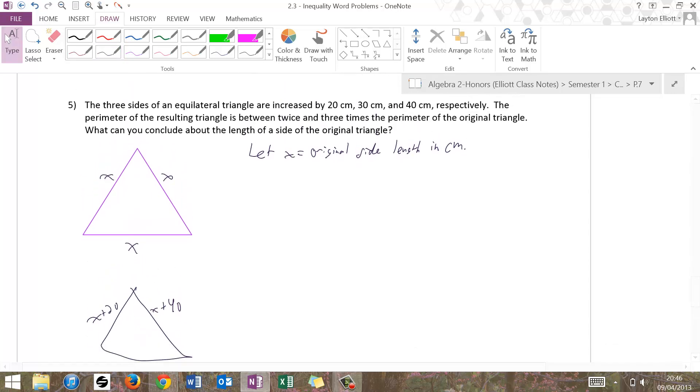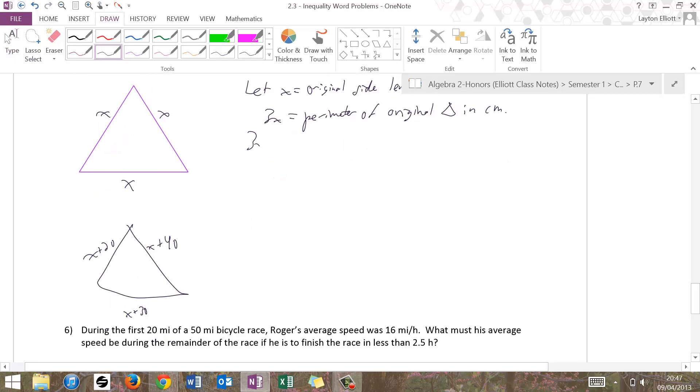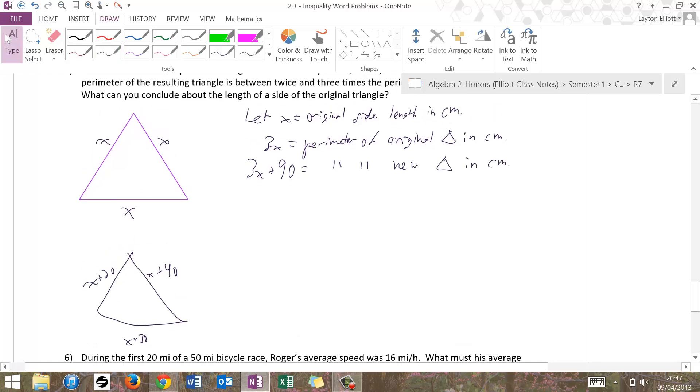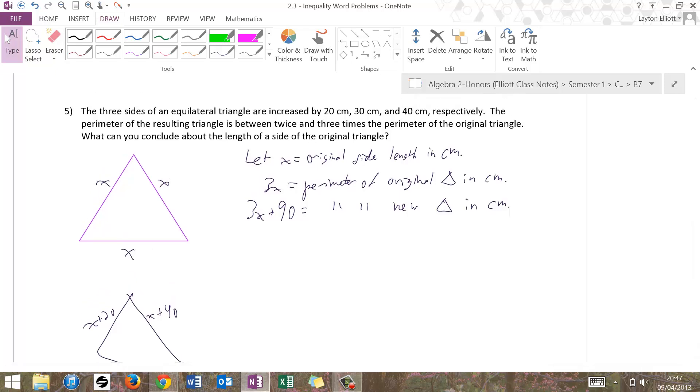And it says the perimeter of the resulting triangle. Well, we want the original triangle. So we're going to say 3x equals perimeter of original triangle. There's the triangle symbol in centimeters. And then if I add up all the ones in the new triangle, it's 3x plus 20 plus 30 plus 40 is 90. 3x plus 90 equals perimeter of the new triangle in centimeters. And it says the perimeter of the resulting triangle, so the resulting one is the one we just have, the new one, is between, so less than, less than, twice and three times the perimeter of the original triangle. So 2 times 3x and 3 times 3x.